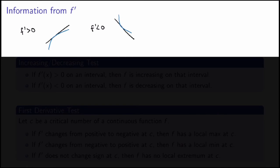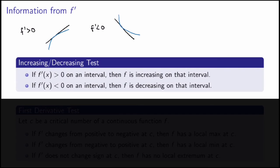Similarly, if the derivative is negative, the tangent line has negative slope, which means the function will be decreasing. This gives us the increasing/decreasing test: over every interval where the derivative is positive the function is increasing, and where the derivative is negative the function is decreasing. This follows directly from the mean value theorem, but I'll leave the proof as an exercise.